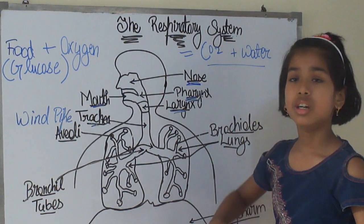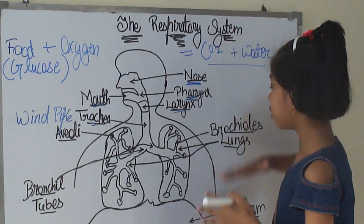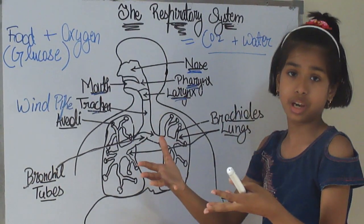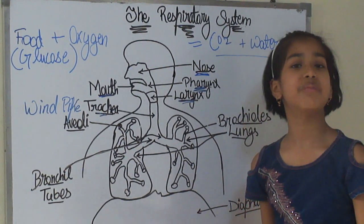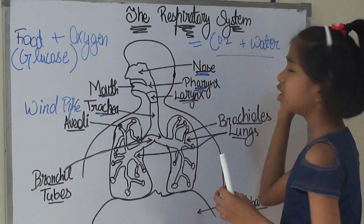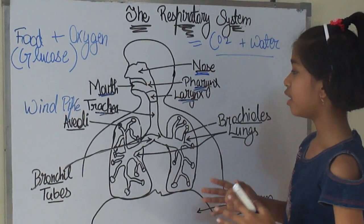So, for carbon dioxide, our body gives out carbon dioxide. Therefore, our body gives out the carbon dioxide and a little amount of water also.